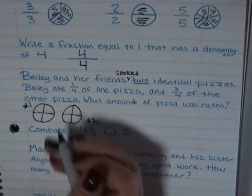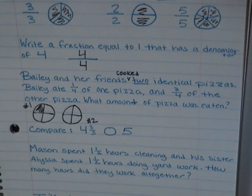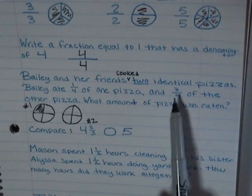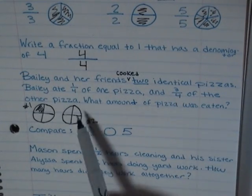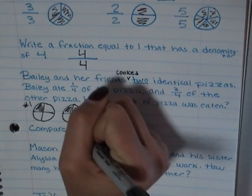So Bailey ate one fourth. So I'm just going to color in one of those pieces. Now, the next part of the question says that Bailey ate three fourths of the other pizza. So I'm going to go ahead and shade in one, two, three.